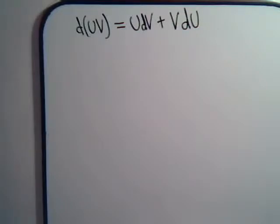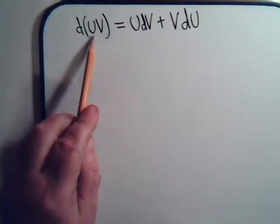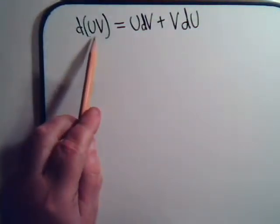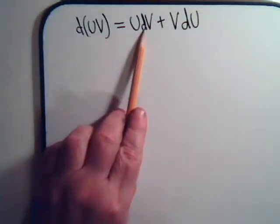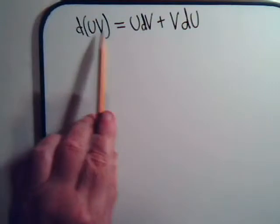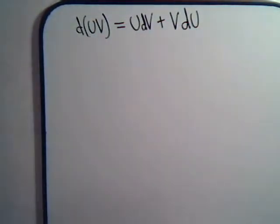Remember that when we're taking the differential of two functions multiplied together, that's going to be this function times this differential plus this function times this differential. And if we solve this equation for UdV, then we're going to have this.